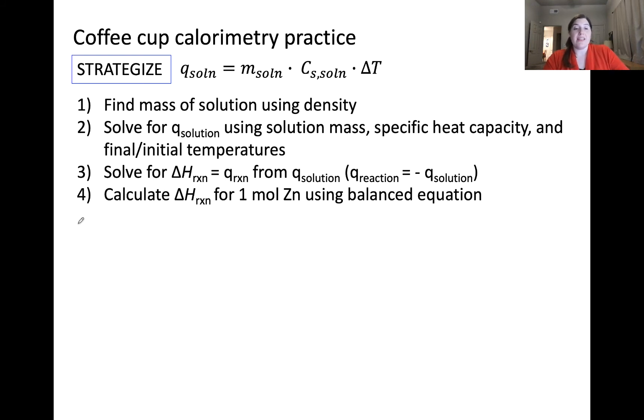Let's start out by finding the mass of the solution using its density. You'll recall that the mass of an object is equal to the volume of that object times its density. In this case, we're talking about the solution, so the mass of the solution is equal to the volume of the solution times the density of the solution. The volume of the solution is given as 50 milliliters. The density of the solution is given as 1.0 gram per milliliter. This means that the mass of the solution is equal to 50 grams.